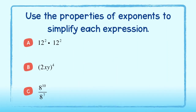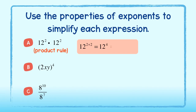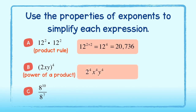Use the properties of exponents to simplify each expression below. We can apply the product rule to A — we will add the exponents to get 12 to the 4th power, which simplified completely is equal to 20,736. For B, we use the power of a product rule. Simply distribute the exponents to each number within the product. After simplifying, we get 16x to the 4th, y to the 4th.